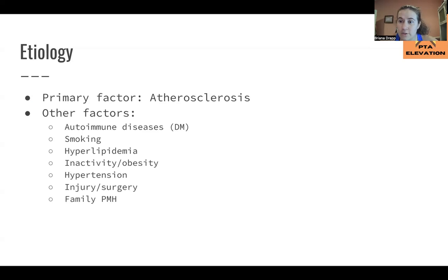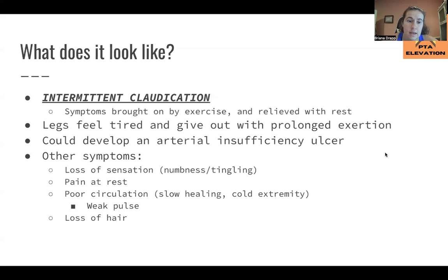Injury and surgery can also cause problems — any sort of compromise to the vessels will not allow them to work properly. A past medical history or family history matters too, as conditions affecting the arteries can have a genetic component. The big clinical sign is intermittent claudication. If you see intermittent claudication, automatically think peripheral arterial or peripheral vascular disease — there is no other condition where you will experience this. It's always going to be a compromise of the arteries.